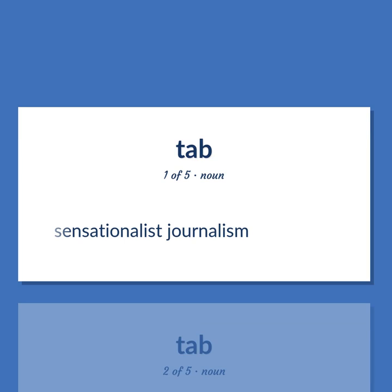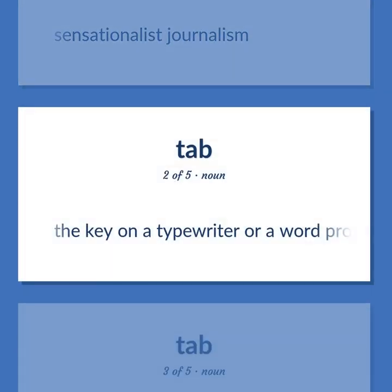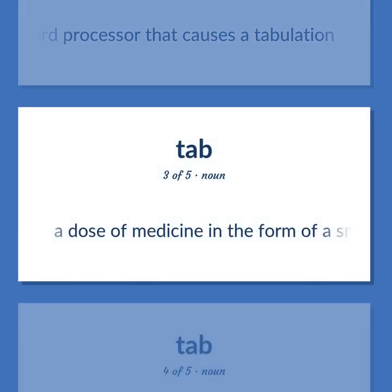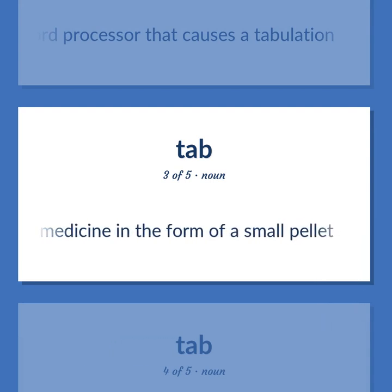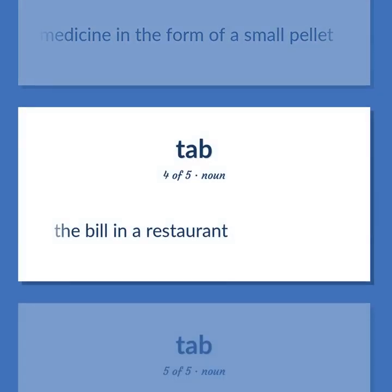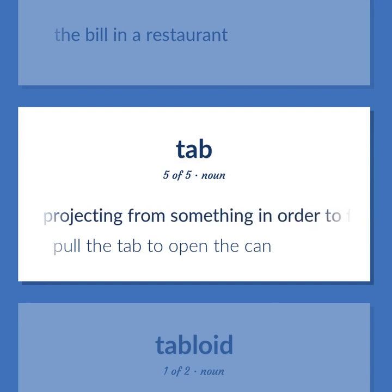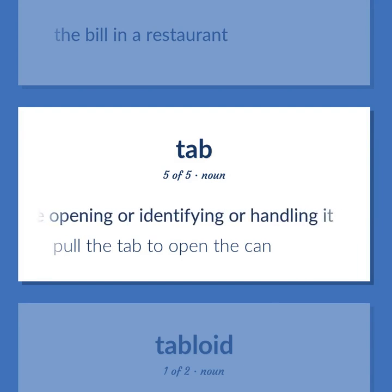TAB: Sensationalist journalism. The key on a typewriter or a word processor that causes a tabulation. A dose of medicine in the form of a small pellet. The bill in a restaurant. A short strip of material attached to or projecting from something in order to facilitate opening, identifying, or handling it. Example: Pull the tab to open the can.